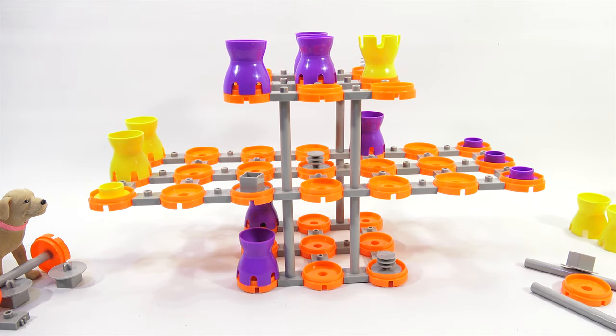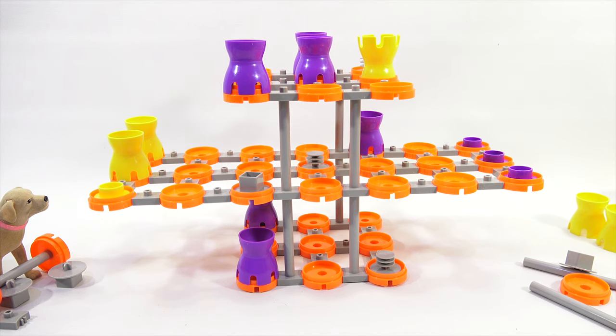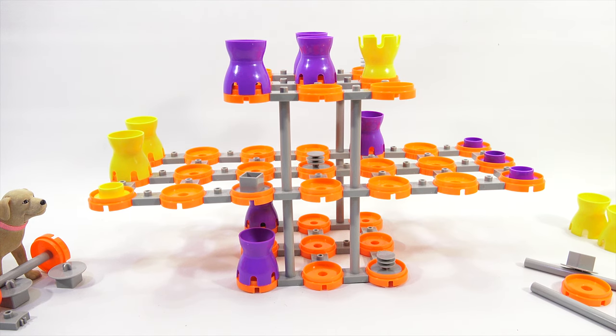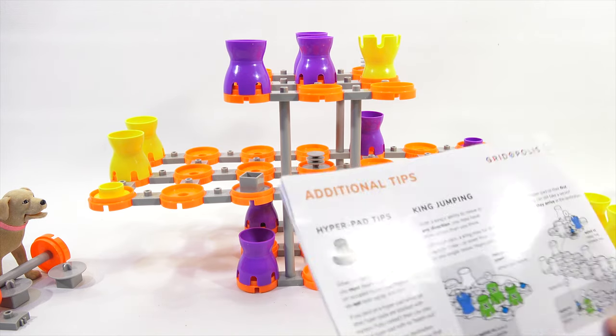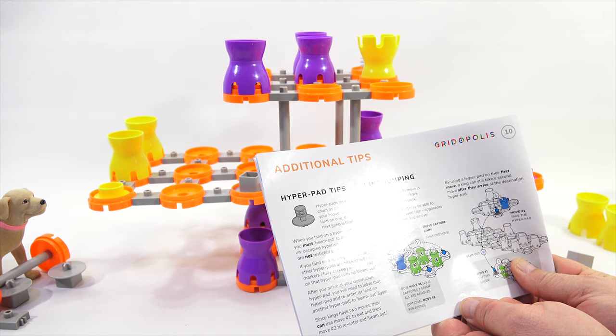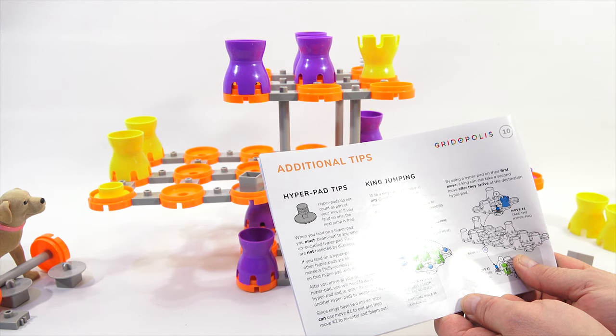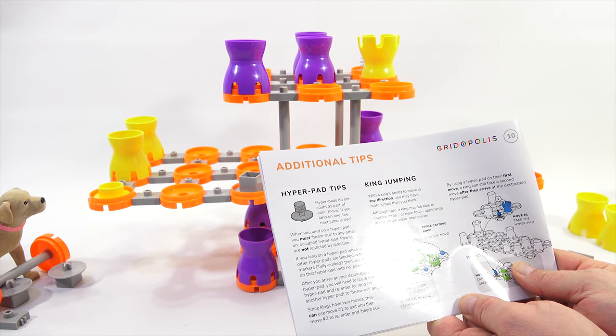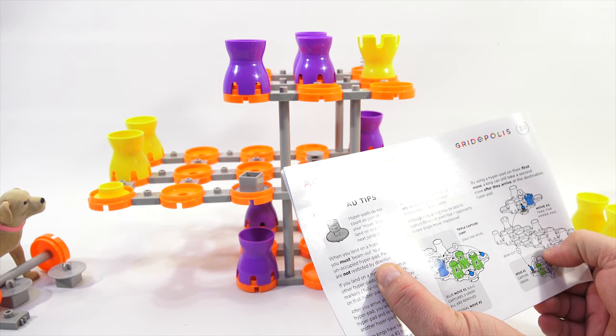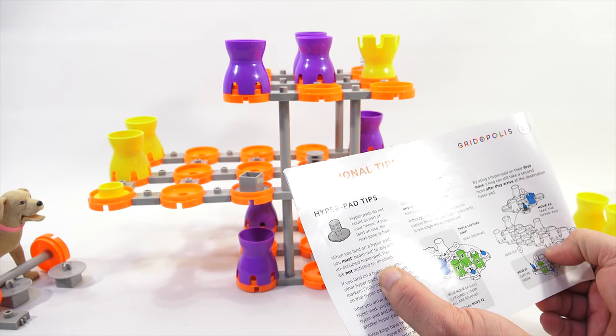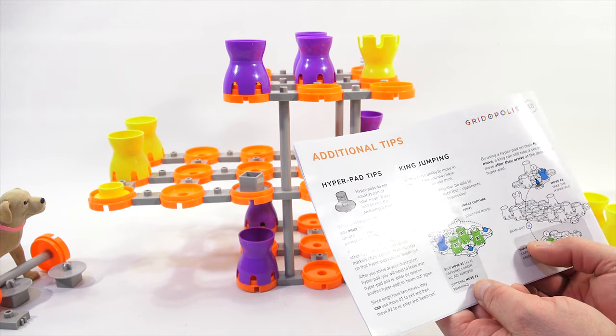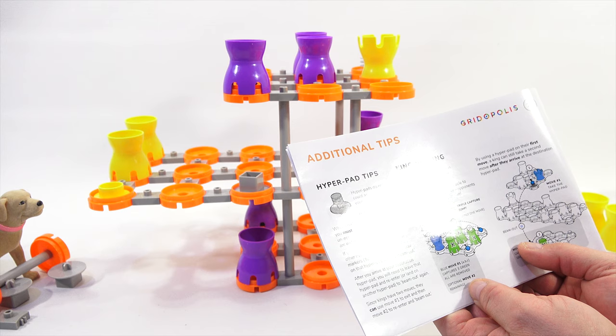Mm-hmm. I'm going to do my hyperbole on this one here. Whoosh! Whoosh! Oh, very nice. Let's start chasing that king out of there. Move him on an angle, OPS. Here? Straight out. Mm-hmm. Mm-hmm. Okay. I'm going diagonally over there. I'm going to shoot down to this one back here. Get him out of the way from your untrustworthy king. Mm-hmm. You can't jump me! Why don't we? You can't jump me! Move up a row. Up a row? Straight ahead. Mm-hmm. Ooh, that's a problem. Mm-hmm. That's a big problem. Oh, I get two moves as a king. Oh, you do? Oh! Oh, boy! Mm-hmm. Mm-hmm. Mm-hmm. I forgot that little detail. Mm-hmm. Mm-hmm. Mm-hmm. Mm-hmm. Mm-hmm. Oh, boy. What's going to happen now? Oh, Butchie gets two moves. What are you going to do? Well, first LPS, Dave, I think I want to add a pad. All right. Well, let's check here now. That's my first move. Hyperpad tips. Mm-hmm. Hyperpads do not count as part of your move. Correct. If you land on one, the next jump is free. Mm-hmm. So that's what we've been doing. Mm-hmm. When you land on a hyperpad, you must beam out to any other unoccupied hyperpad pawns. Mm-hmm. Check. Okay, so I think we're playing that wrong. Mm-hmm. Mm-mm. When you land on a hyperchub pad, you must beam out to any other unoccupied hyperpad. That's exactly right. Okay. Mm-hmm. If you land on a hyperpad when all the hyperpads are blocked, okay, we got it. All right. If you arrive at your destination hyperpad, you will need to leave that hyperpad and re-enter or land on another hyperpad to beam out again. Mm-hmm. Since kings have two moves, they can use move one to exit and then move two to re-enter and beam out.